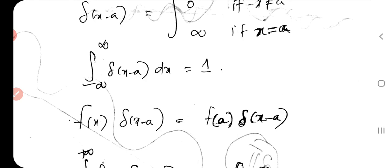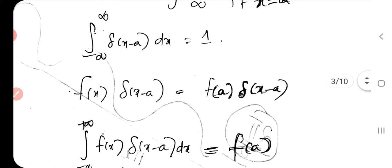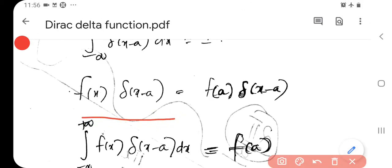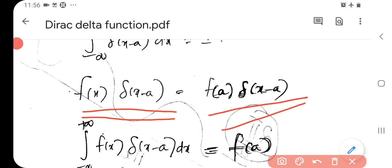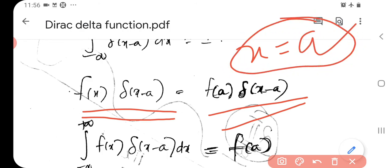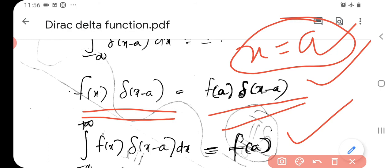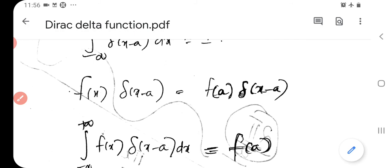As we wrote earlier, we can write f(x)·Delta(x minus a) equal to f(a)·Delta(x minus a), because Delta(x minus a) is non-zero only at x equal to a. Therefore, the integral from minus infinity to plus infinity of f(x)·Delta(x minus a) dx equals f(a).